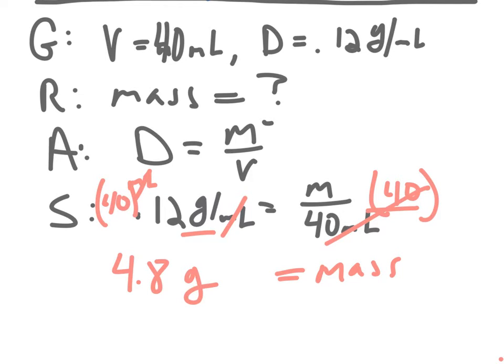So the mass of a 40 milliliter sample of balsa wood is 4.8 grams. I'll have that suffice for my paraphrase there.